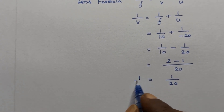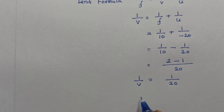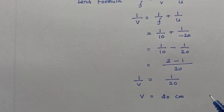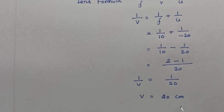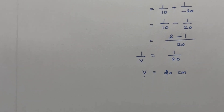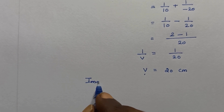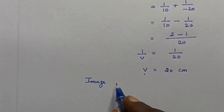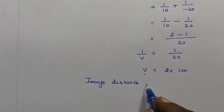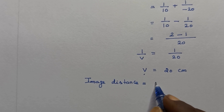This gives us 1 by v equals 1 by 20. Taking the reciprocal, we get v equals 20 centimeters. Since all units are in centimeters, v equals 20 centimeters. V is the image distance, so image distance is equal to 20 centimeters.